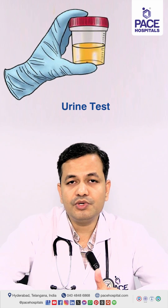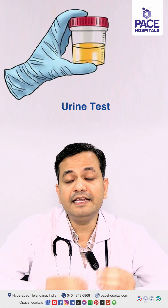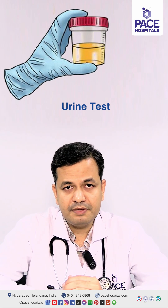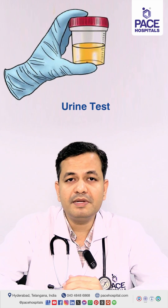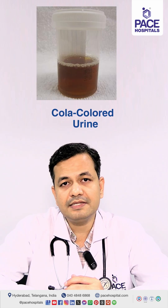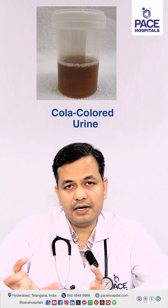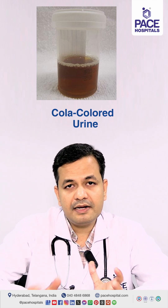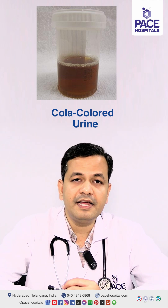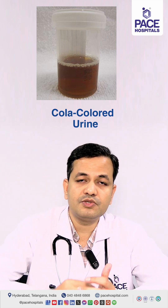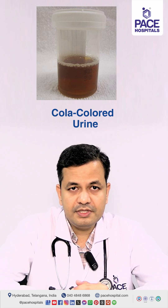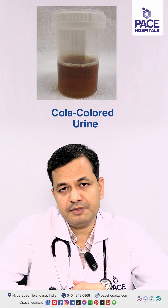Majority of patients usually would not have any symptoms in the initial stages. But if a patient develops a symptom, the common symptoms are: the first one is cola colored urine. Cola colored urine is like a Coca-Cola color — the urine will be dark, and this usually happens after an episode of infection, mainly like sore throat, skin infection, or respiratory infection. This is the first symptom.